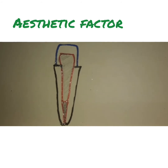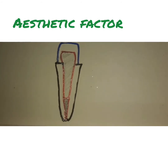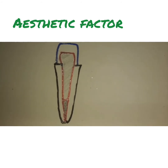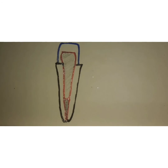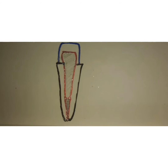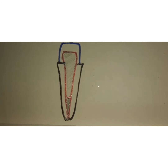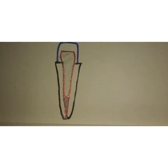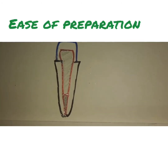A gap between the retainer and tooth structure allows plaque accumulation, leading to periodontal problems and failure of the fixed partial denture. Other requirements include aesthetic requirements — any retainer should be aesthetically pleasing and should match the pontic or adjacent natural tooth. An ideal retainer should also be easy to prepare.